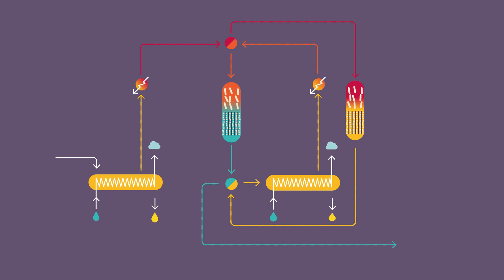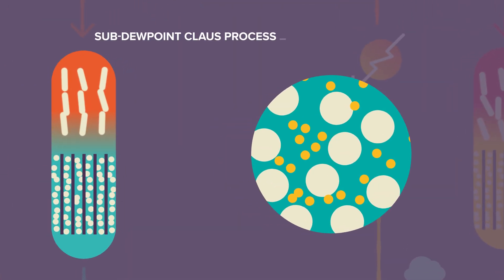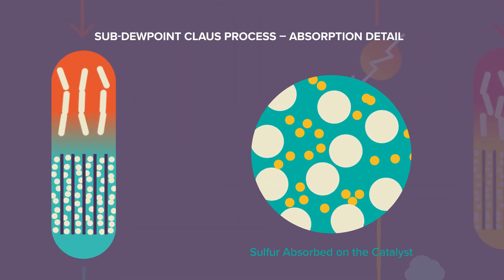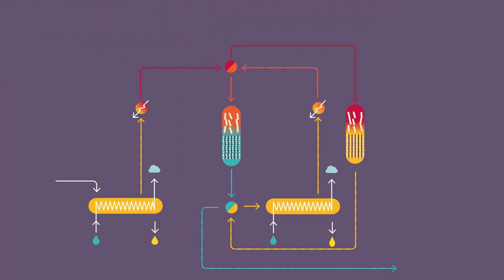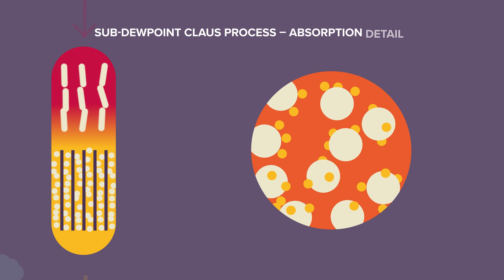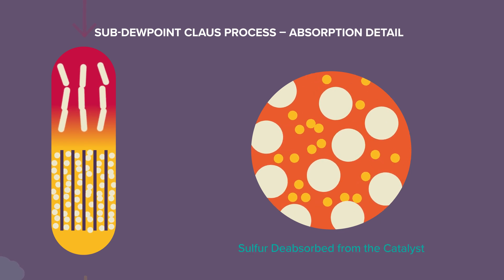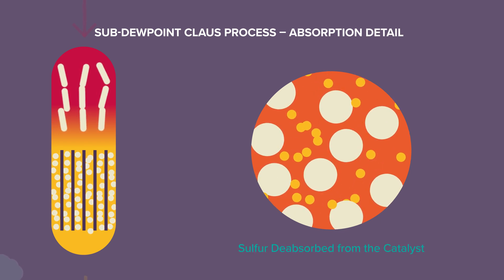This procedure consists in reversing the sequence of the two reactors. The hot mode reactor, free of sulfur, shifts to the absorber position and becomes the cold one, whereas the sulfur saturated cold mode reactor becomes the hot one, where the sulfur will be desorbed in the hot conditions.